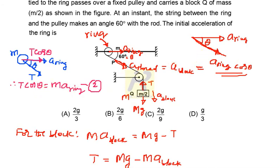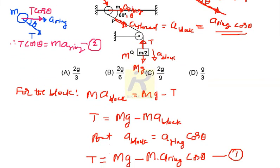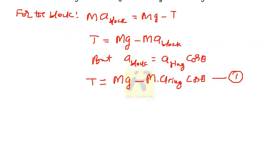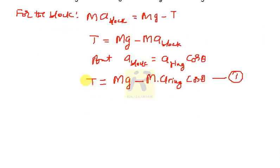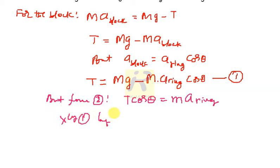So now use this equation in equation 1. So T cos theta is m a ring. T is here. But what we got? But from 2, what we got? From 2, it is T cos theta is equals m a ring. So for that reason, I say you one thing. This one. Multiply equation 1 by cos theta.